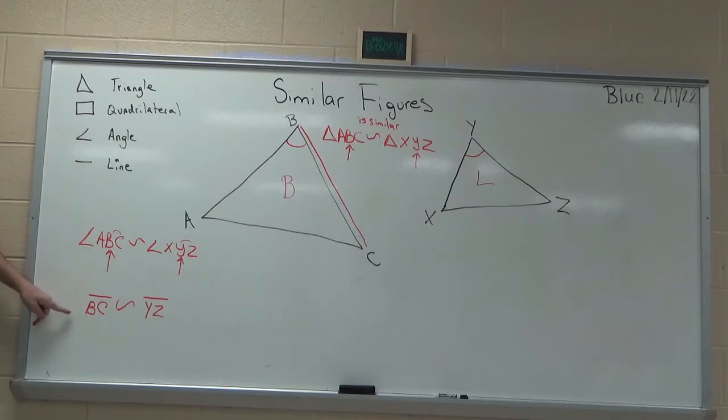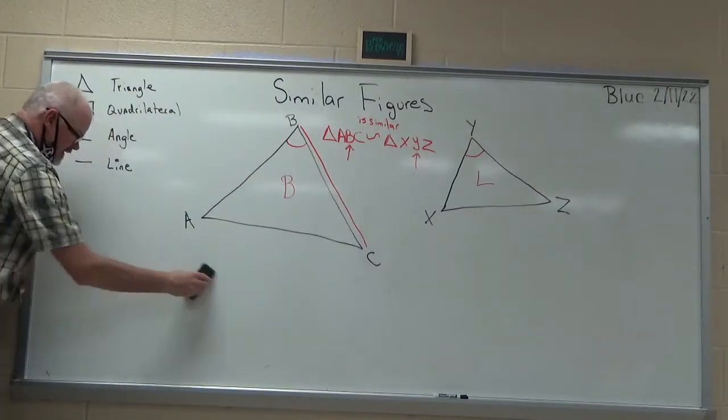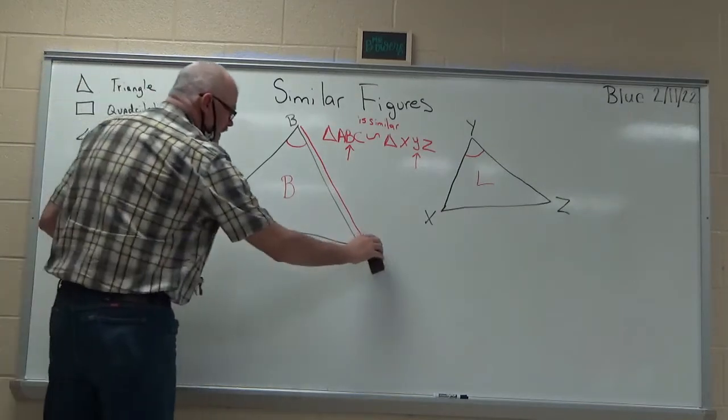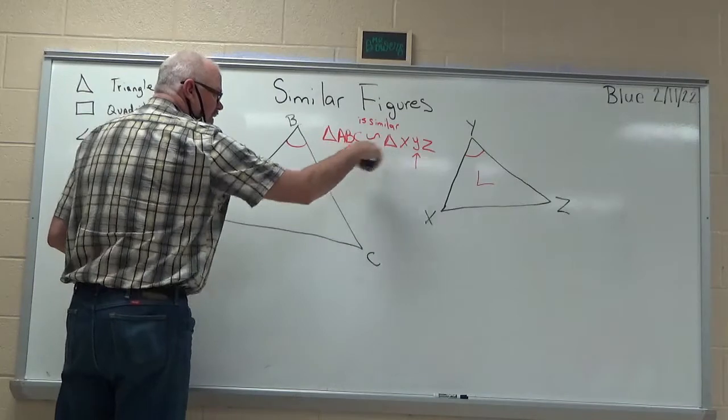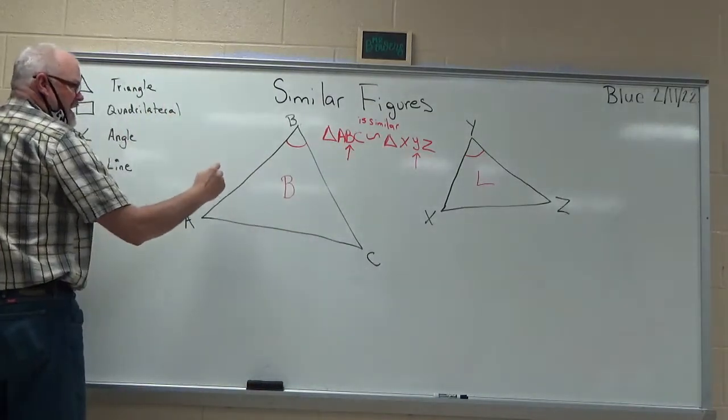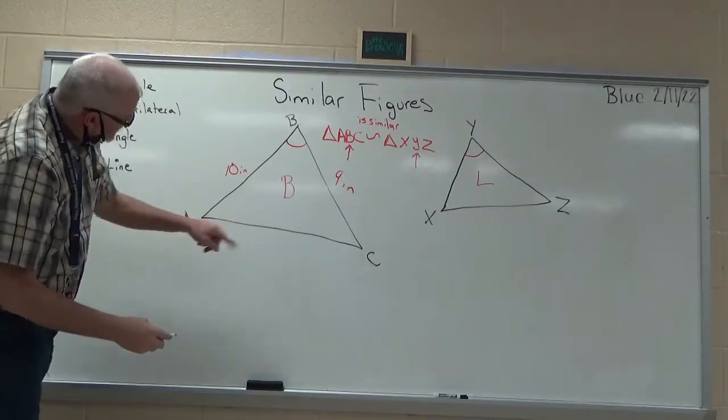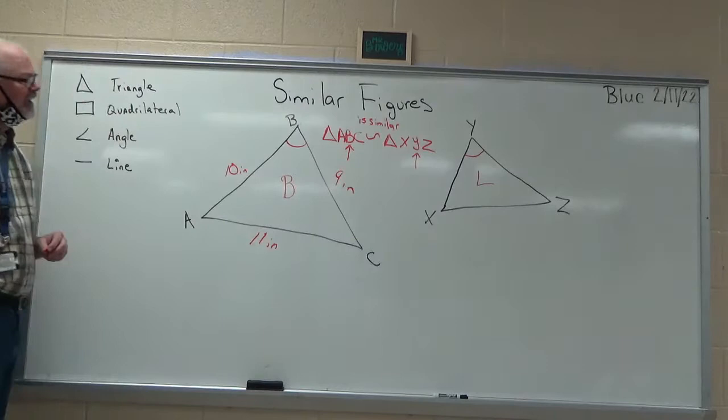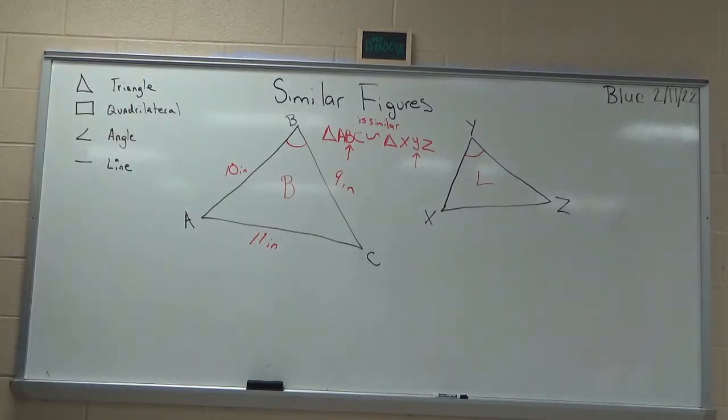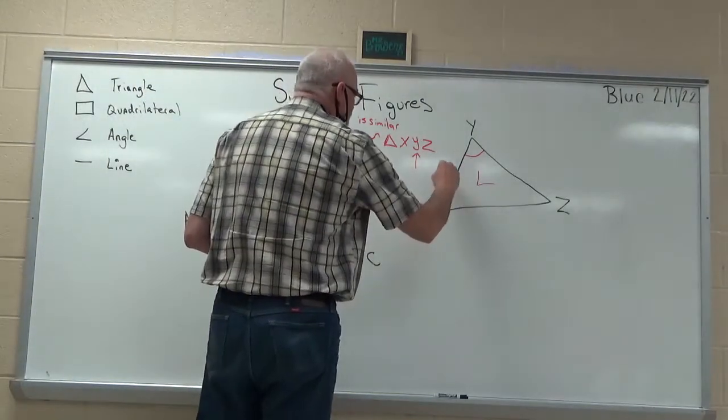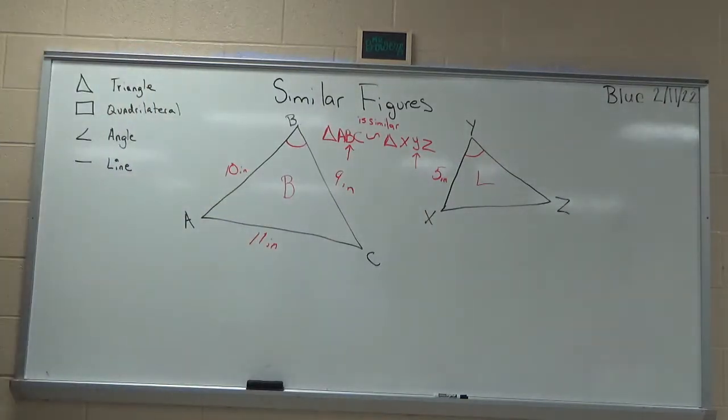Sometimes, this is the way they ask the question. But most of the time, they give you numbers. Let's say this triangle, and I haven't measured it yet. We know they're similar. But let's say from A to B is 10 inches. This is 9 inches. Does this look longer? Let's make it 11 inches. Let's say this one over here is 5 inches, and that's the only thing they tell us. We can find how long the other sides are by setting up a proportion.